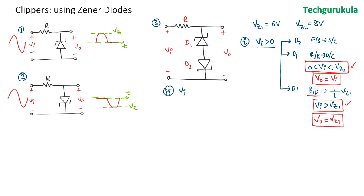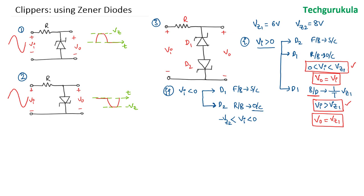Now the second case: when VI is less than 0, D1 will be forward biased and we treat it as a short circuit. We only need to worry about D2. D2 will be in reverse bias — not in the breakdown region — given VI is between 0 and minus VZ2, ensuring Zener diode 2 is not in breakdown. In that case it acts as an open circuit, and the output voltage equals the input voltage.